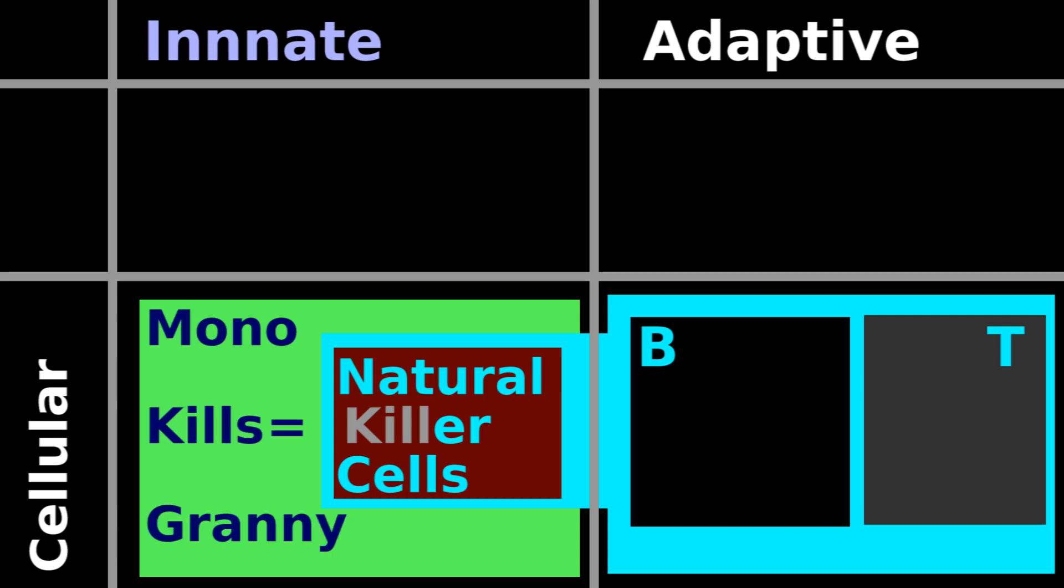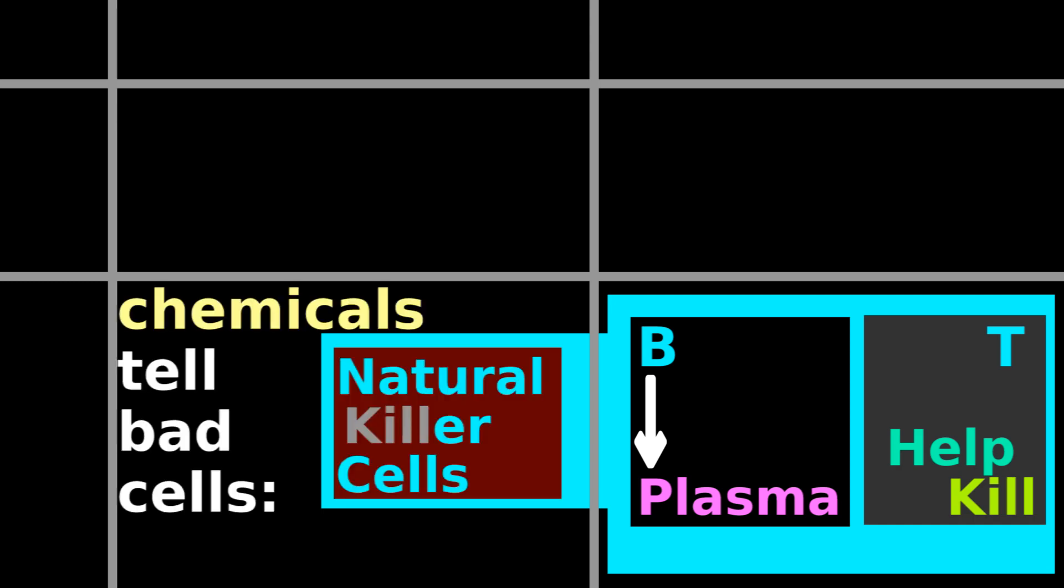B cells grow up to be plasma cells, and these plasma cells release antibody, which you've probably heard of before. T cells either help or kill, and natural killer cells release chemicals that tell bad cells to commit suicide.